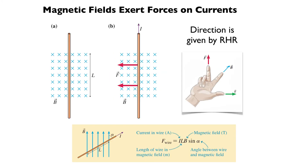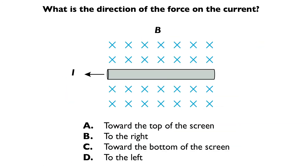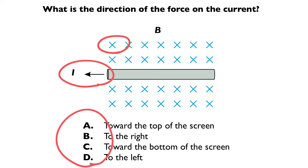Magnetic fields also exert forces on currents. The direction is given by the right-hand rule, and current is the flow of positive charge. Take your thumb in the direction of the current, your next finger in the direction of the magnetic field, and your middle finger gives you the direction of the force. The force on the wire is I times L times B, with sine of alpha equal to 1. Here's a class problem: if the current is going to the left and the magnetic field is going into the screen, what is the direction of the force? Think it over.